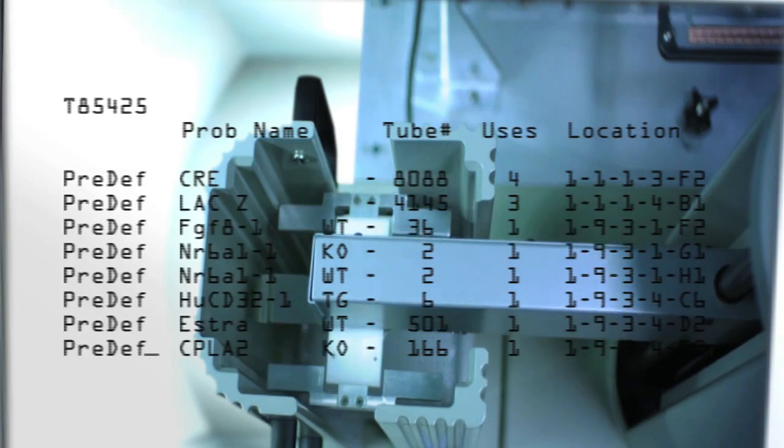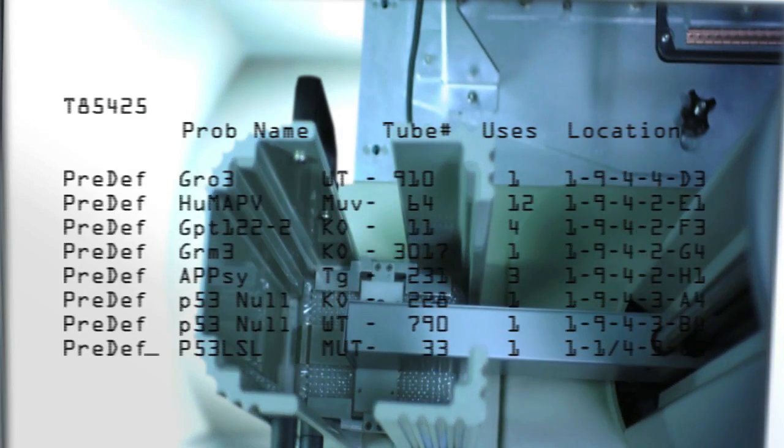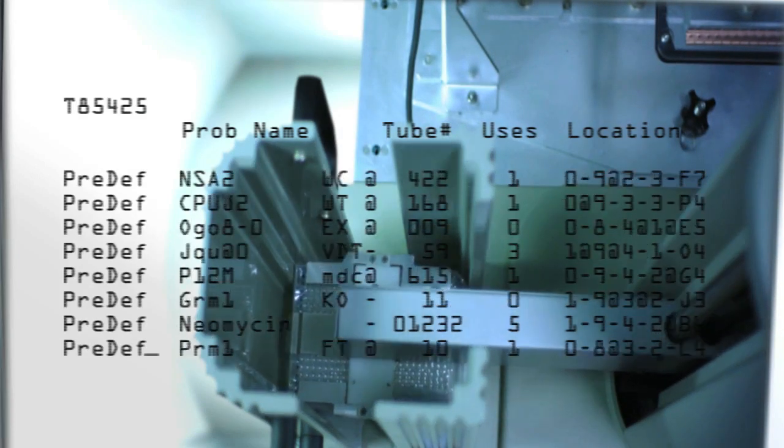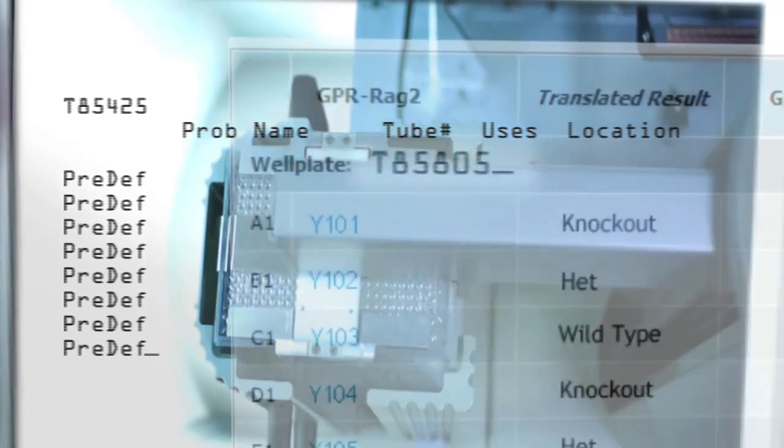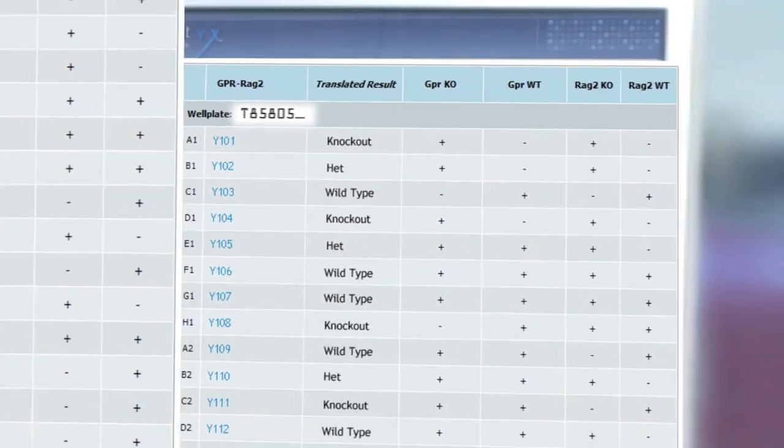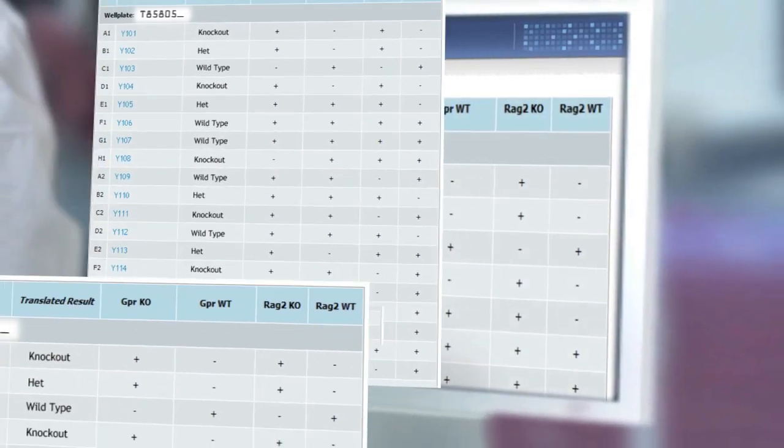Next, a robot arm picks up the plate and loads it into the ABI 7900. The data is processed through our LIMS system where more than 100 quality control checks are evaluated, and then, after having satisfied those criteria, the results are posted online to your password-protected account.